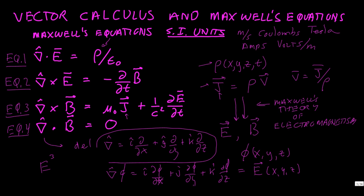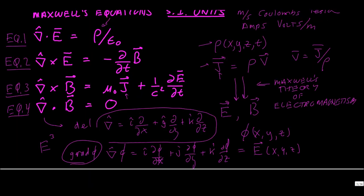This operation, when acting on a scalar field, is called the gradient of phi. It gives a vector pointing in the direction of fastest increase of the scalar field phi. Now we can do some theory on these equations, and the first bit involves using a vector identity involving the curl of B.